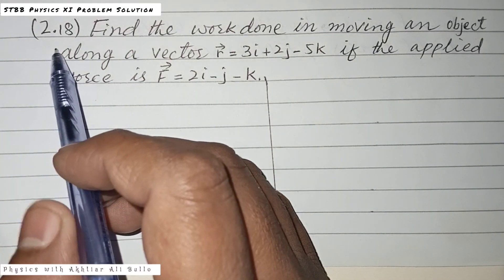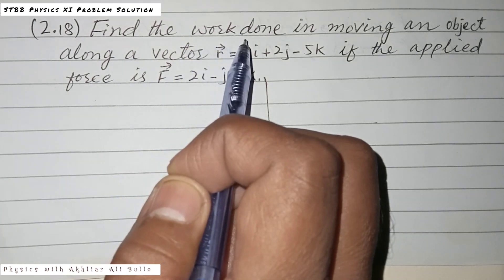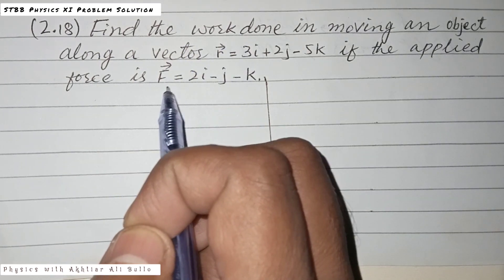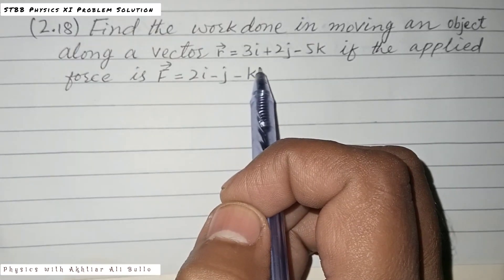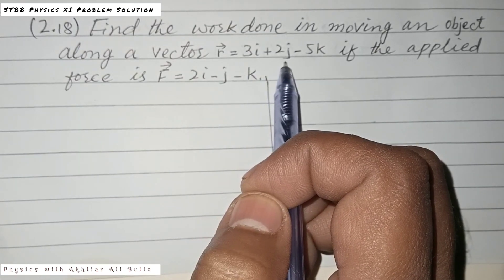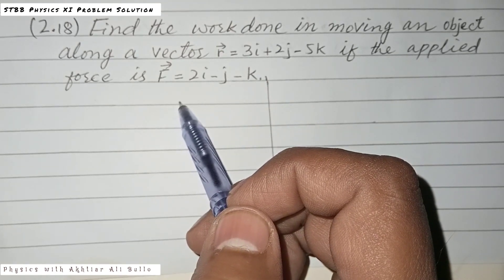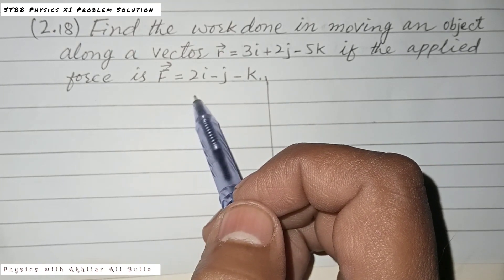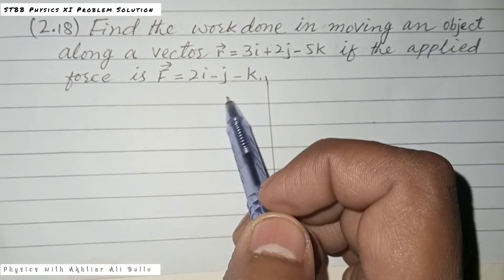Problem number 2.18 is: find the work done in moving an object along a vector r equals 3i plus 2j minus 5k if the applied force is F equals 2i minus j minus k.